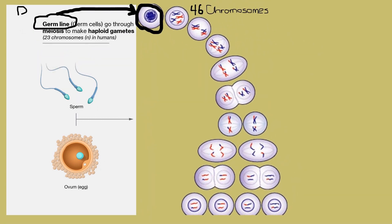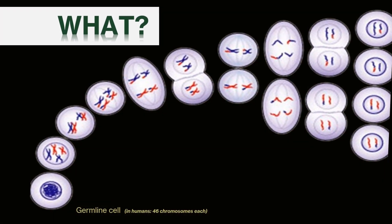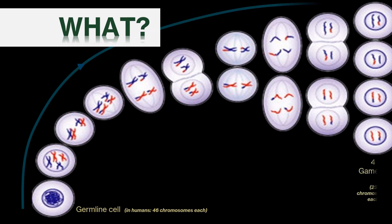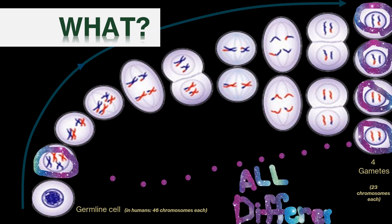In summary, the parent cell of meiosis is a diploid germ cell, not a somatic cell, setting the stage for the production of haploid gametes necessary for sexual reproduction. We are taking germ cells and, through this process, making gametes that are all genetically different from each other, as well as genetically different from the original parent cell.